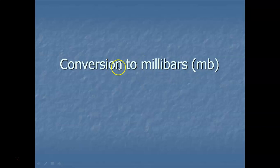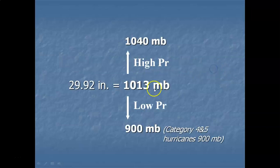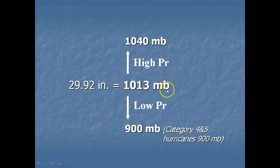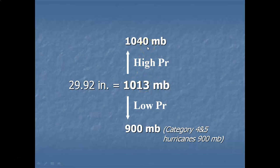In modern meteorology, they use the metric unit, and there's a conversion from inches of mercury to millibars. Standard sea level air pressure is 29.92 inches of mercury, which equals 1,013 millibars — just over 1,000 millibars. Any reading above 1,013 is considered high pressure. The highest reading you'll ever get on Earth is about 1,040 millibars, which usually occurs in Siberia in wintertime.